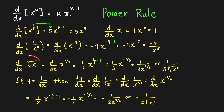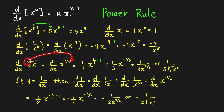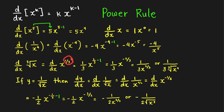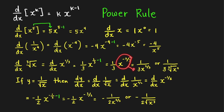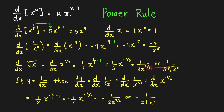Next, the derivative of the cube root of x. We want to write it in the form x raised to k first, so we convert the radical to rational exponents. The cube root of x equals x raised to 1 third — the index goes to the denominator of the exponent. Now k equals 1 third, so we apply the power rule: bring down the power and subtract 1 from it. So 1 third minus 1 equals negative 2 thirds. We move that factor to the denominator to make the power positive, and the answer can also be written in radical form as 1 over the cube root of x squared.